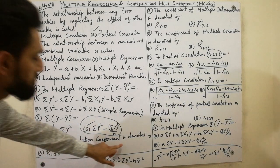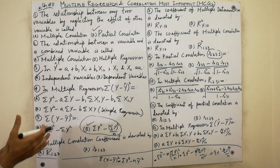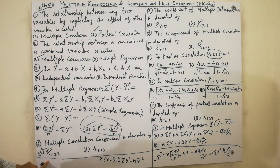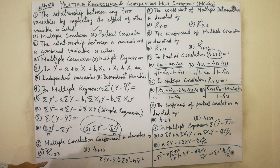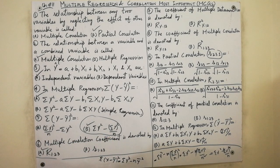The multiple correlation coefficient is denoted by capital R 1.23. This is because multiple correlation represents the relationship between one variable and a combined variable. So the multiple correlation coefficient is noted by capital R, specifically capital R 1.23, not small r.